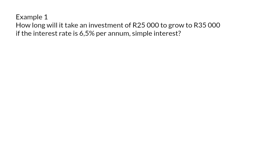Example 1. How long will it take an investment of 25,000 rand to grow to 35,000 rand if the interest rate is 6.5% per annum simple interest? This investment starts at 25,000 rand which will be the P-value and grows to 35,000 rand which forms our A-value.